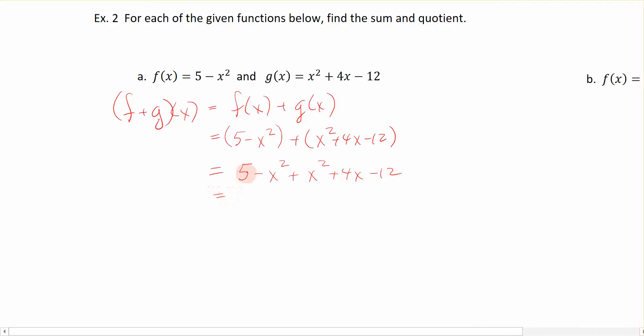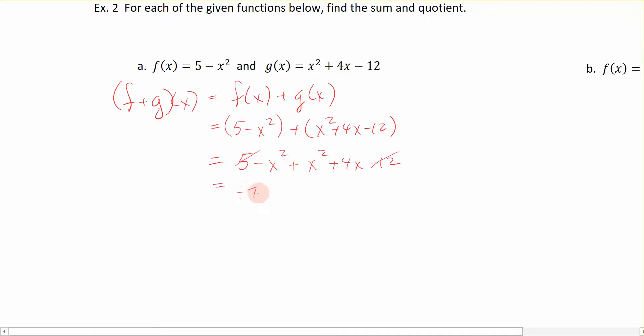So starting with the number 5, I can combine 5 minus 12, because they are alike, and I get negative 7. Here I have minus x squared plus x squared, and that just leaves me with a plus 4x. So when I add f of x to g of x, I get a brand new function, which is right here, and this function is negative 7 plus 4x. So we created a brand new function.